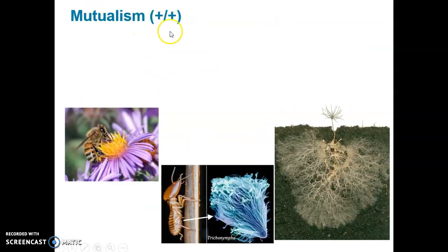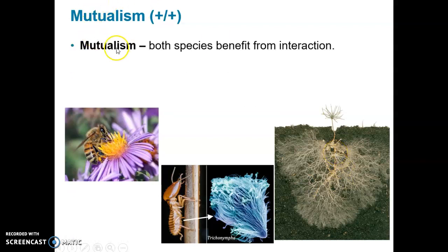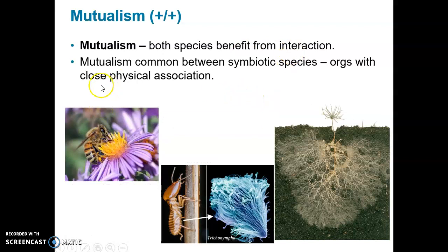Mutualism is a plus-plus interaction where both species benefit. A bee and a flower: bees pollinate and help flowers reproduce, while the bee gets nutrients from the plant — plus-plus. Termites and their symbiotic protists are both benefited as we discussed. Mutualism is common among symbiotic species, and both species benefit from the interaction.